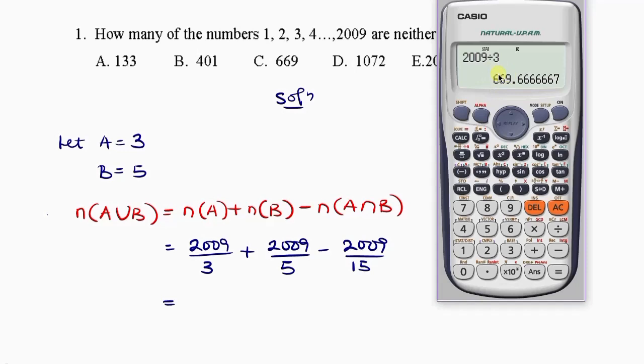We're only going to choose the whole number. Forget about the decimal fraction. The whole number there is 669. That was the first one.